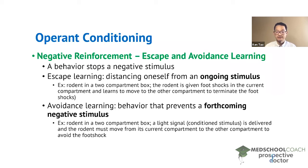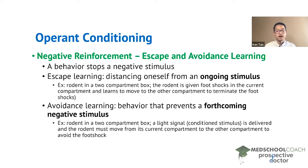Avoidance learning is when the animal performs a behavior that prevents a forthcoming negative stimulus — the negative stimulus has not been delivered yet. Using a similar setup with a rodent in a two-compartment box, a conditioned stimulus in the form of a light is delivered. When there is a flash of light, the rodent must move to the other compartment to avoid the foot shock. The light serves as a warning signal: the rodent learns that if it doesn't move, it will receive a foot shock. Escape learning is escaping from an ongoing stimulus, whereas avoidance learning is performing a behavior to prevent a negative stimulus from occurring.